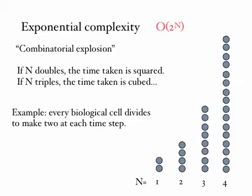So there's an example illustrated here, supposing we've got a biological cell or some other data structure in a computer program, and every one of these cells at every time step divides to make two new cells. So if N is 1, we might have two cells. If N is 2, we would have 4 cells. If N is 3, we would have 8 cells. If N is 4, we have 16.